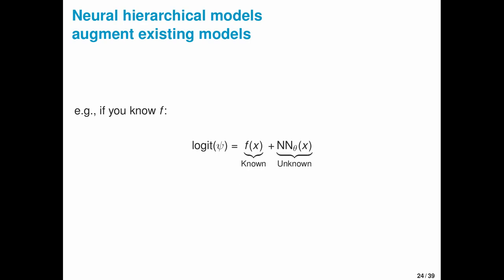One thing that I want to reiterate is that neural hierarchical models augment, they don't replace existing models. So if there's some component of a model that you know, f in this case, you can retain that and approximate some unknown component of your model using a neural network.